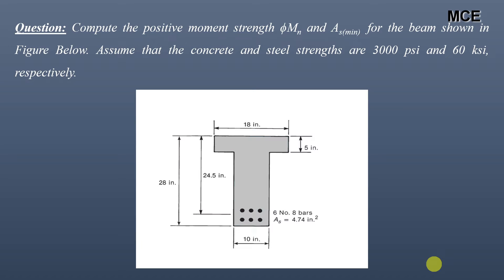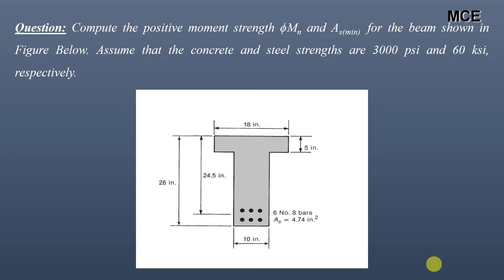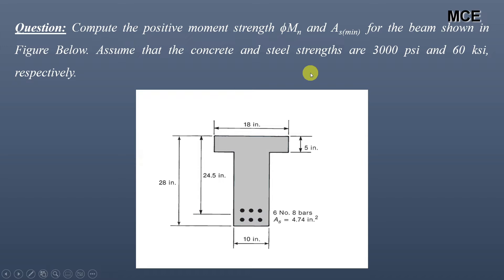Welcome back to the Master's Wheel Engineering. In this video we will learn how to find the design moment for a T-beam when the neutral axis lies in the web. We have been given a question which asks us to find the positive moment strength and minimum steel for the beam shown in the figure. We assume concrete and steel strengths are 3000 psi and 60 ksi respectively.